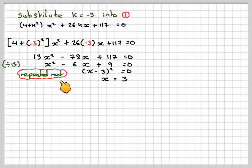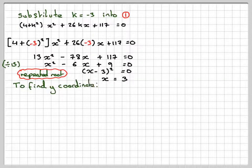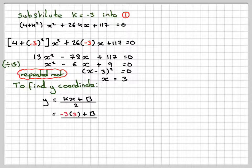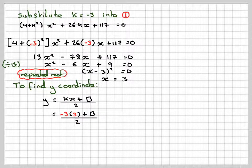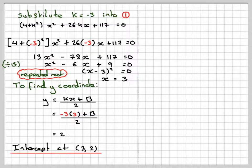We expected a repeated root because this is the tangent case. To find the y-coordinate, we substitute into the line equation: y equals kx plus 13 over 2, so y equals (minus 3 times 3 plus 13) over 2, which gives 2. So for k equals minus 3, the line and circle meet at the point (3, 2).